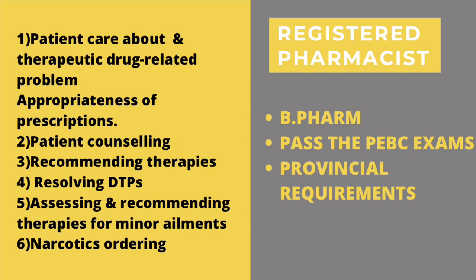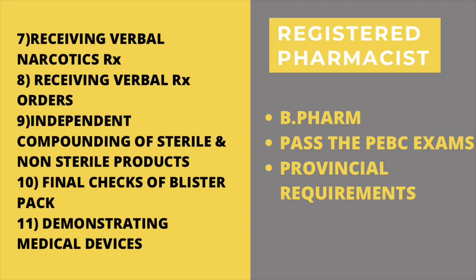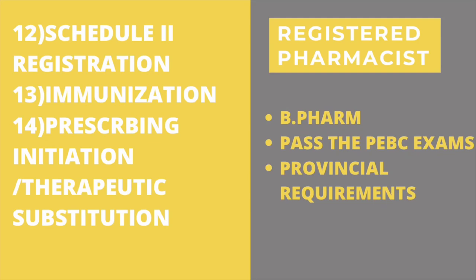Pharmacists can also assess and recommend therapies for minor ailments. They are responsible for narcotics ordering, receiving verbal narcotic prescriptions, receiving verbal prescription orders, independent compounding of sterile and non-sterile products, and final checks for blister packs. Pharmacists can also do Schedule 2 drug recommendations and demonstrate medical devices. In Alberta, pharmacists can additionally prescribe medications, but you need additional certification beyond your pharmacist registration for that.